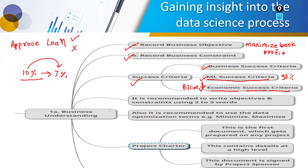In this way we have the content related with business understanding. It is recommended to write objective and constraint using two to three words or a short sentence, using words like 'minimize' or 'maximize'. After finalizing this business understanding, the first document created is called the project charter — similar to a service level agreement (SLA). Before starting the project, the team, domain experts, and client agree on certain terms and conditions, which is the project charter.